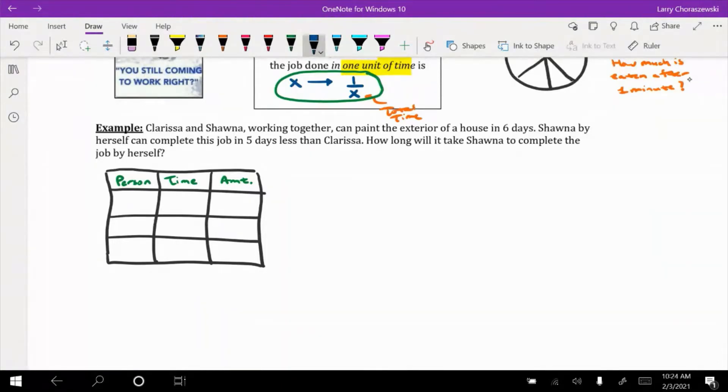The first person I'm going to put here is Clarissa and Shawna. And I'd also like to consider them when they work together. In fact, in this first sentence of the problem, it says Clarissa and Shawna working together can paint the exterior of the house in six days. So that actually gives us something that we can put in the very last row in the time column working together. It takes them six days, so I'm going to put six there.